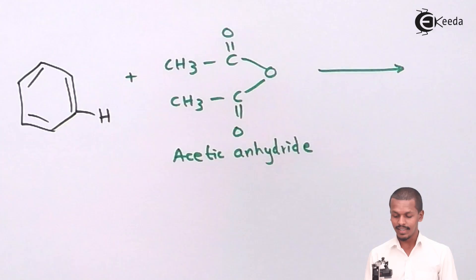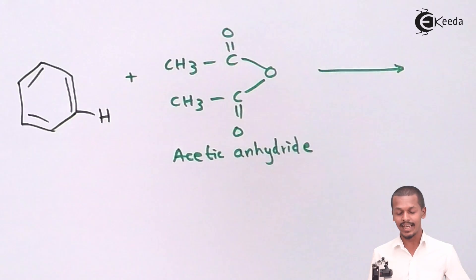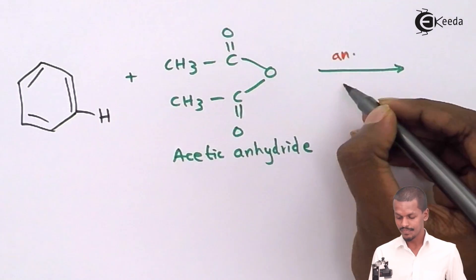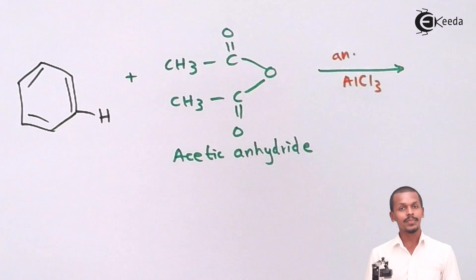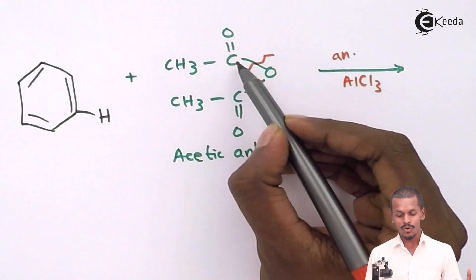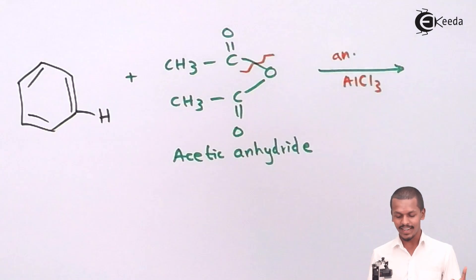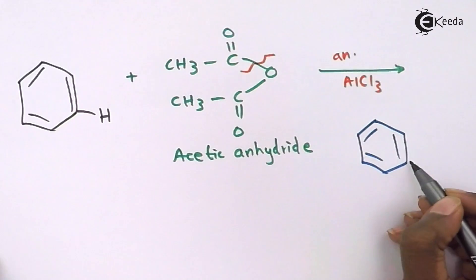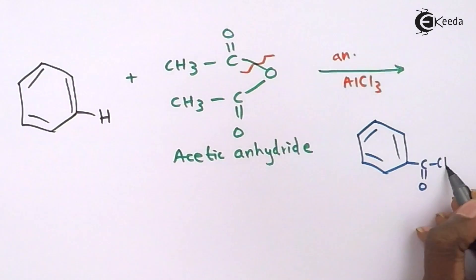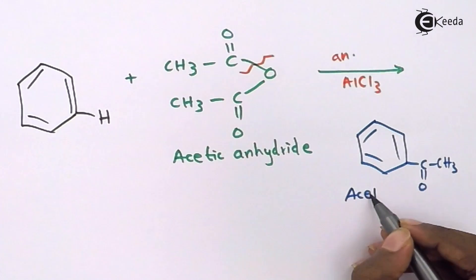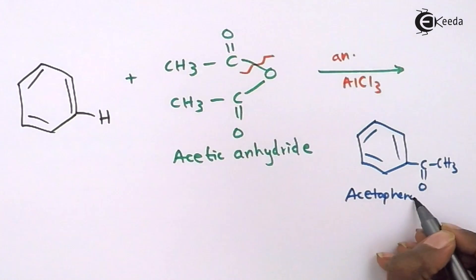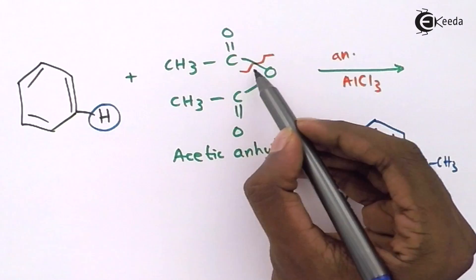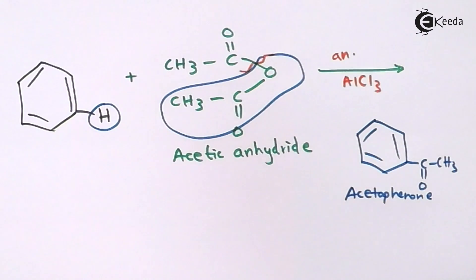In this reaction with anhydrous AlCl3, the bond breaks making a positively charged group, which replaces the hydrogen atom on benzene. The product obtained has a C=O and CH3 group, making it Acetophenone. The rest forms a byproduct that is acetic acid.